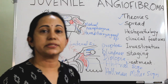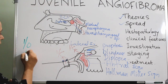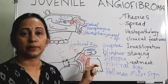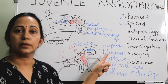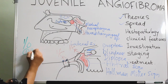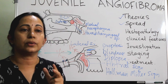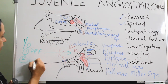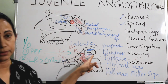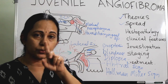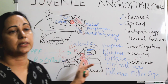Intraorbital extension occurs by two routes. The first is from the sphenopalatine foramen spreading laterally into the pterygopalatine fossa, then through the inferior orbital fissure into the orbit. The second is through anterior extension into the nose, from where it erodes the lamina papyracea and breaches into the orbit.